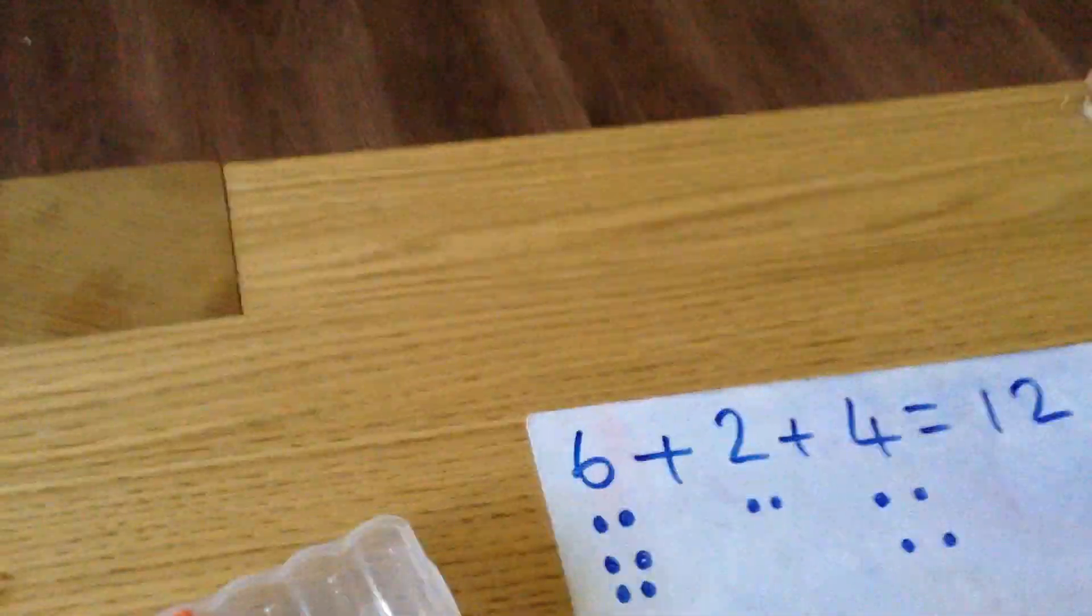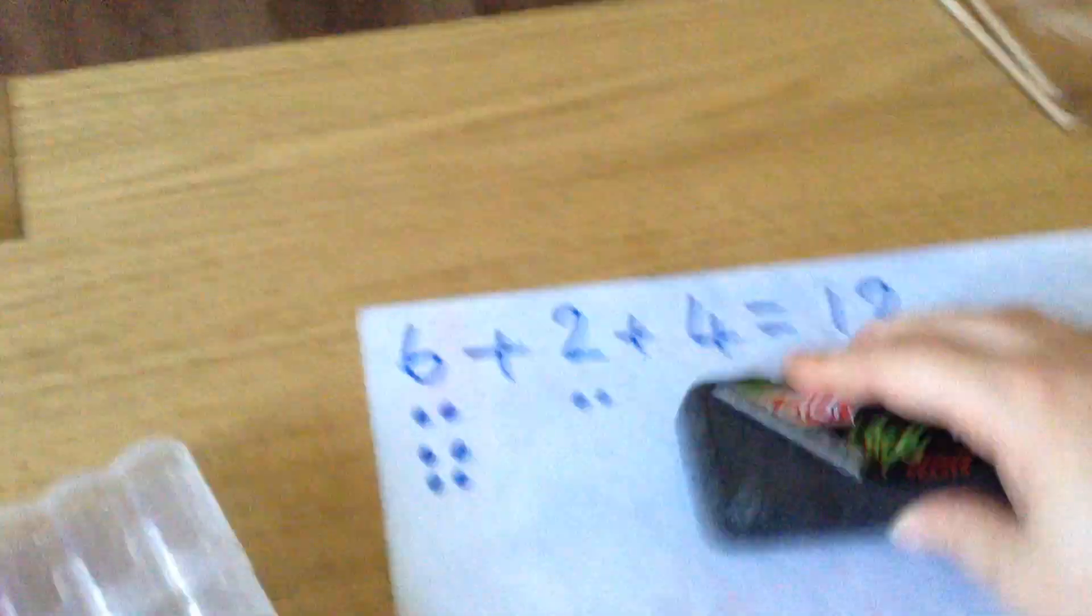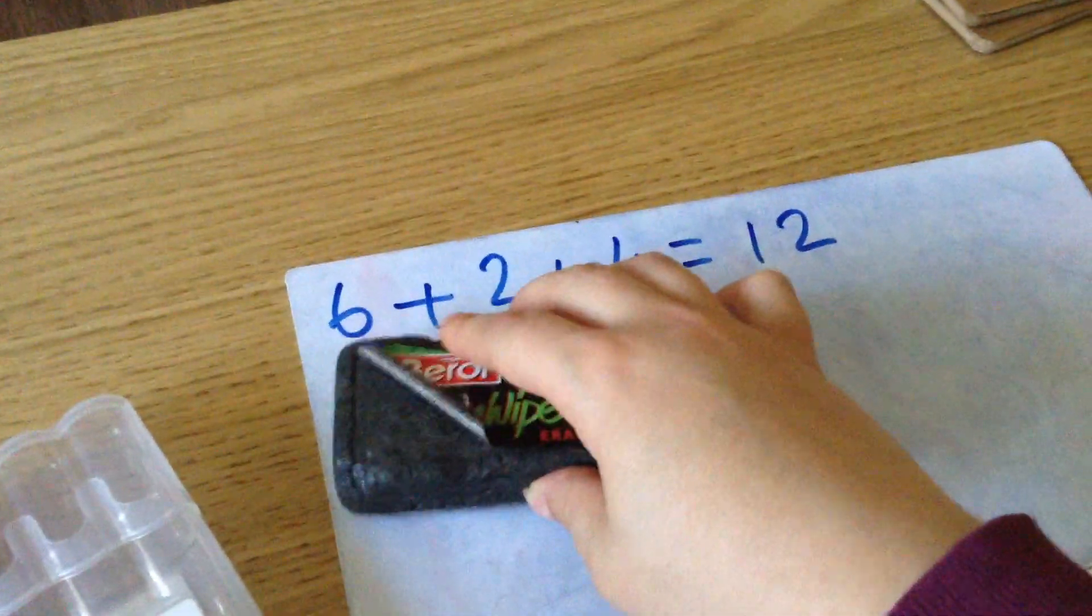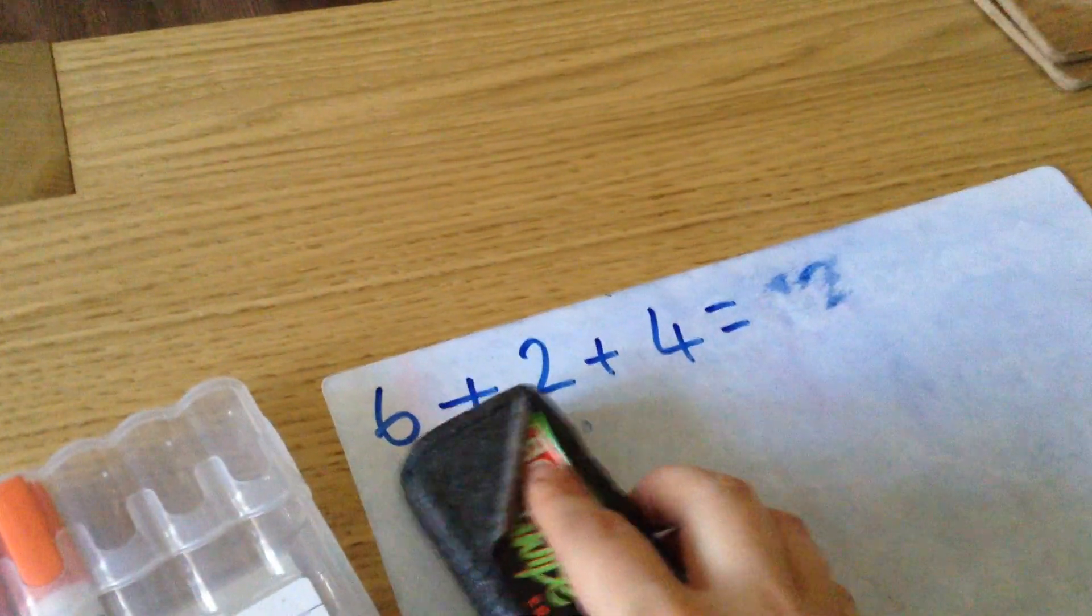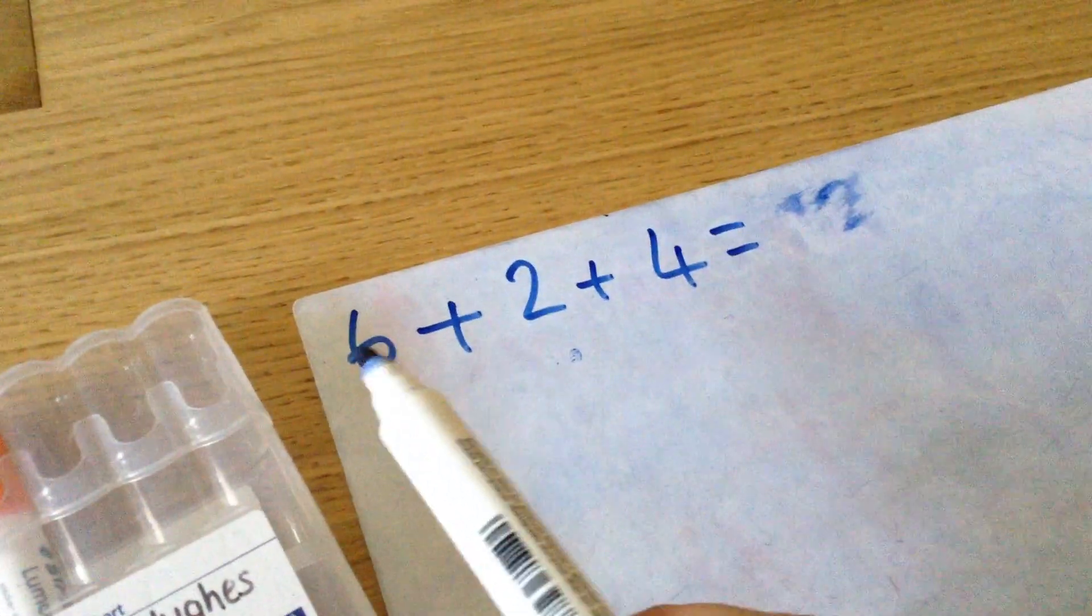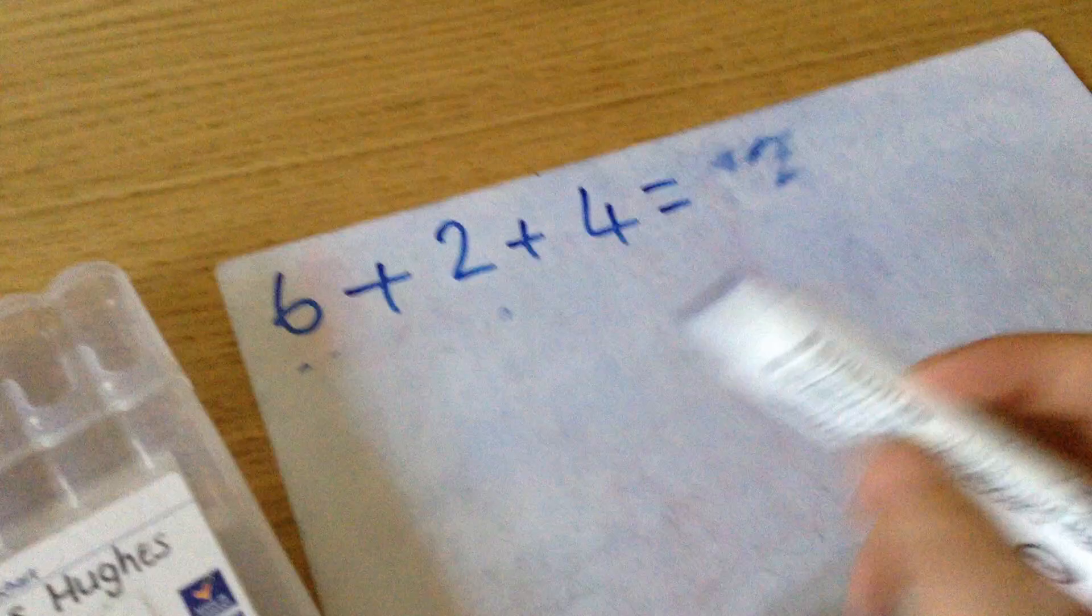Now, if you're feeling really clever, we could get the answer a different way. This way we've done in class and you need to look for your number bonds. So I can see here that I've got six and four that make ten.